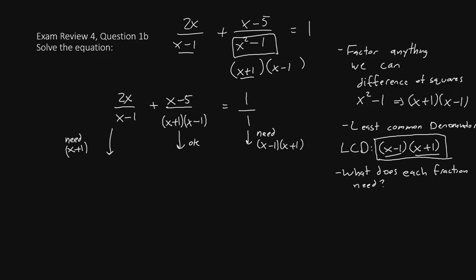Here's what we should do. We're going to multiply on the top and bottom by the missing piece. We're going to do this for all fractions. So, the first fraction has x minus 1 already, but it needs x plus 1. So what we'll do is start with 2x over x minus 1, multiply both the top and the bottom by x plus 1.